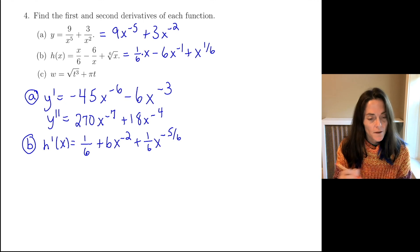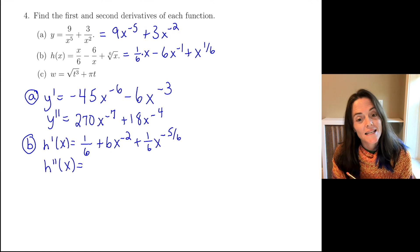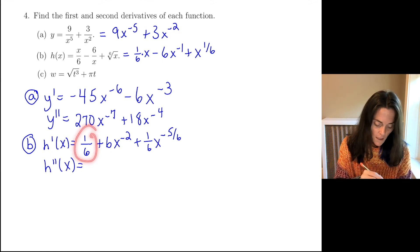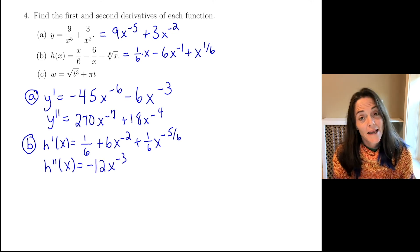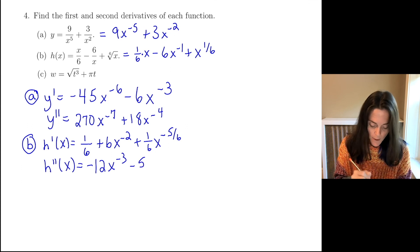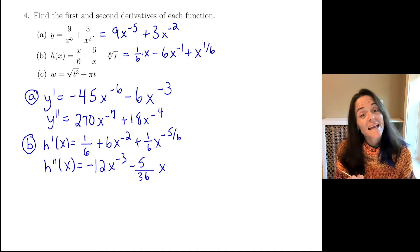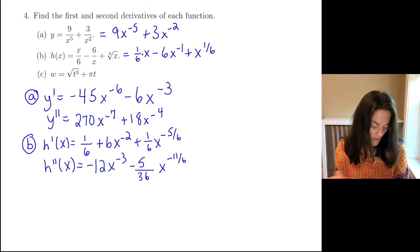This is the first derivative. Now the second derivative: the derivative of the constant 1/6 is 0. We have 6 times minus 2, times x to the minus 3. Now 1/6 times minus 5/6 is minus 5 divided by 36, times x to the minus 11/6 — because negative 5/6 minus 1 is negative 11/6.